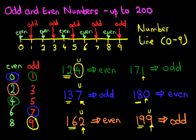And that is how we work out the odd and even numbers up to number 200. As long as you know the odd and even numbers from 0 to 9, this is very, very simple.